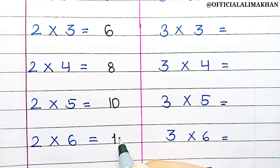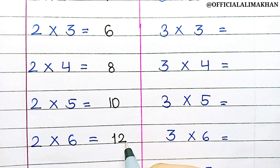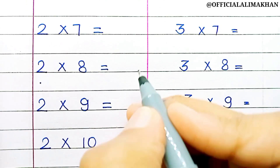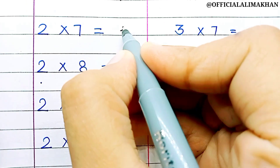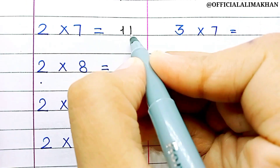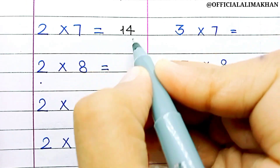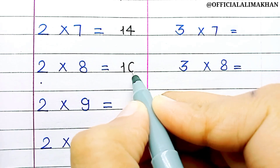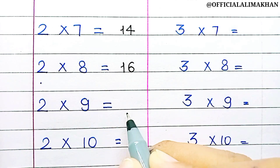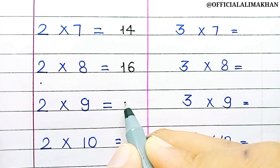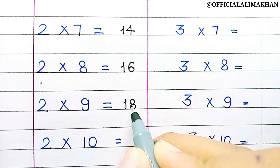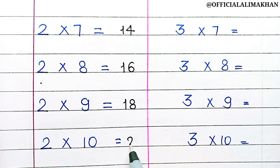2 6s are 12, 2 7s are 14, 2 8s are 16, 2 9s are 18, 2 10s are 20.